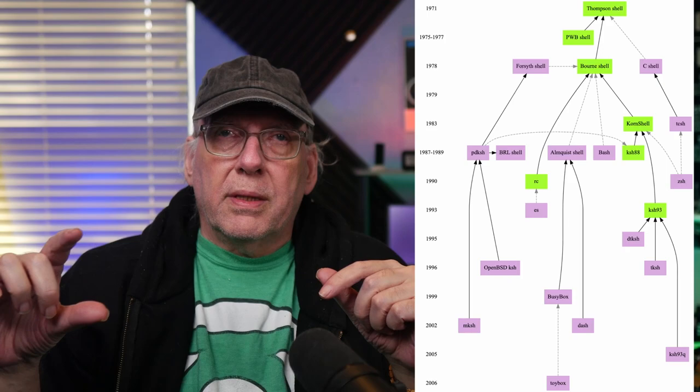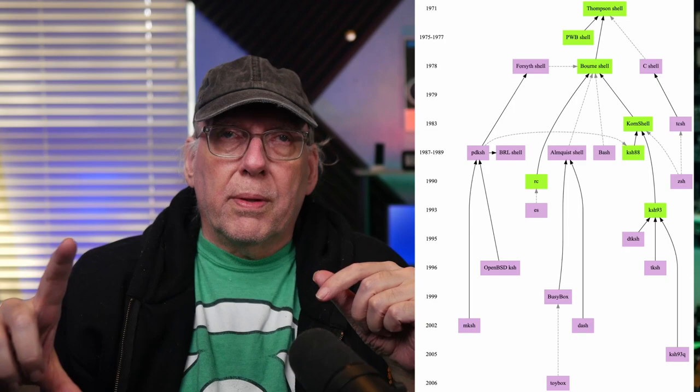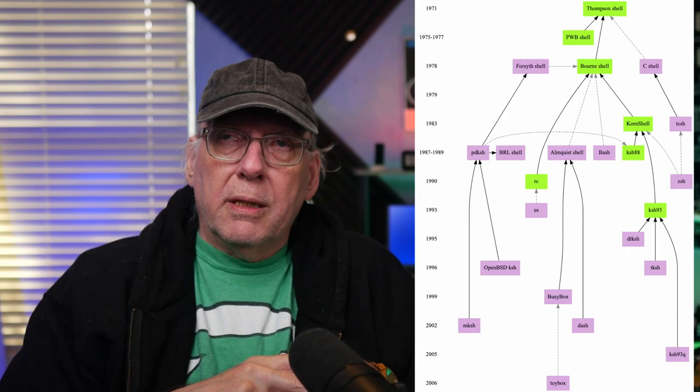The Korn shell was written by David Korn and released by AT&T as open source in 2000. You'll notice there are two forks — one is called PDK shell, the open source version, and then K shell. When you get down to 93Q, that's open source, based on the code released by AT&T in 2000. Anything previous to that could be considered closed source, because at the time of the license it was closed source. If it's not specifically released as open source, you have to assume it's closed source.